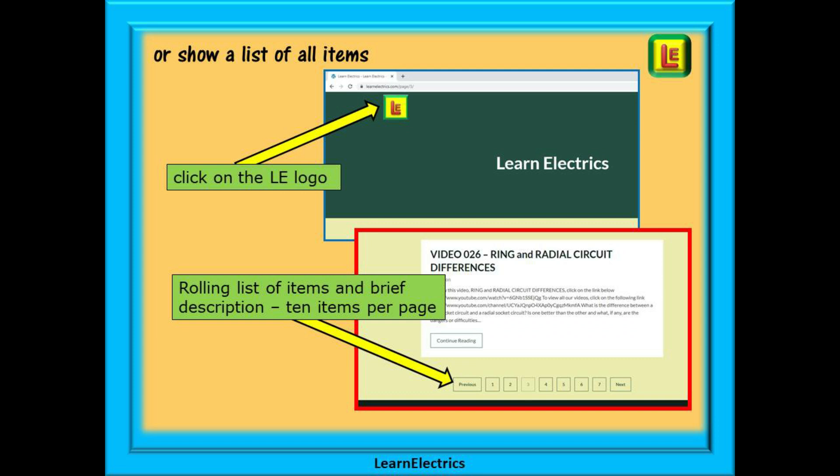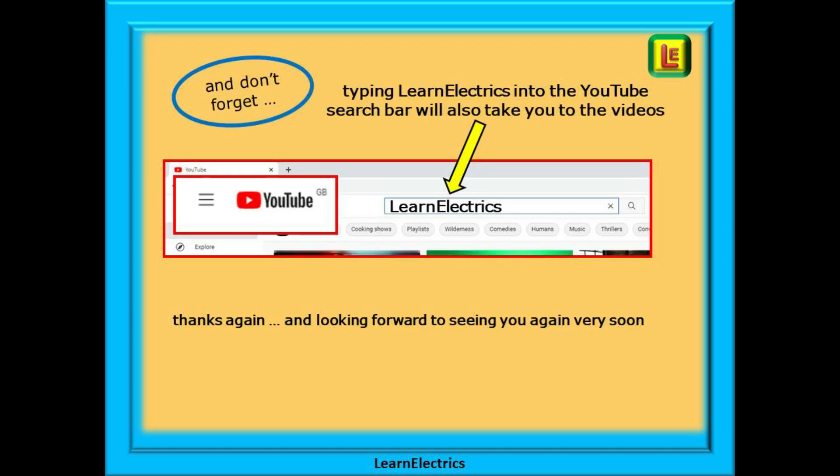Or you can browse through a list of all the available items and videos. To do this click on the LE logo on the top left of the home page and all our items and videos will be shown. There will be 10 items shown on each page and at the bottom of each page is a page selector. Page 2, 3, 4 and so on that will bring up the next 10 items or videos in the list. And don't forget that you can also type in learnelectrics as one word into the YouTube search bar to go directly to our channel at any time from any computer.